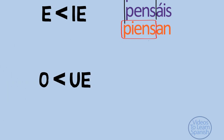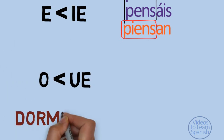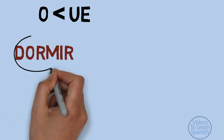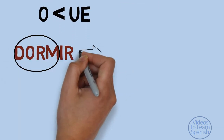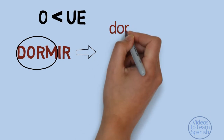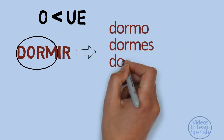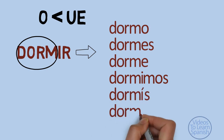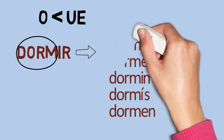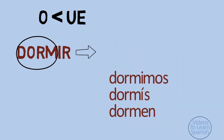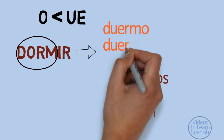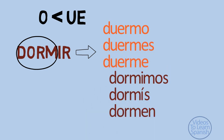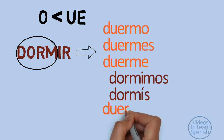Something similar happens with dormir. If we conjugate it as a regular verb, we get: dormo, dormes, dorme, dormimos, dormís, dormen. The correct conjugation is: duermo, duermes, duerme, dormimos, dormís, duermen.